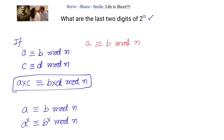We start with saying: we want 2 power 22. We begin with 2 power 4, and note that 2 power 4 and 16 are congruent modulo 100. The meaning of that is: if I take 2 power 4 and 16 and subtract them, the result is divisible by 100.